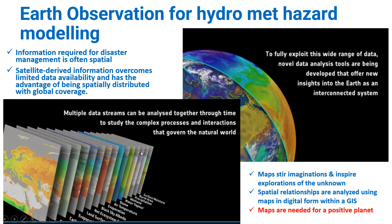To fully exploit this wide range of data, novel data analysis tools are being developed that offer new insights into the Earth as an interconnected system. We have multiple data sets — covering evapotranspiration, surface moisture, and land cover. When you use earth observation data sets, remote sensing data sets, and GIS data sets, spatial relationships can be analysed using GIS. GIS is essential for a positive planet — that is my submission.